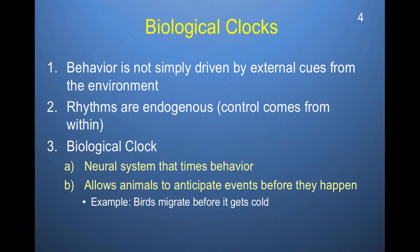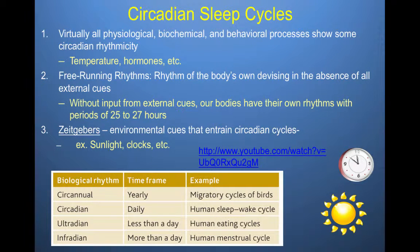To regulate our biological rhythms, we have a biological clock. Behavior is not simply driven by external cues from the environment — biological rhythms are actually endogenous, meaning the control comes from within our bodily system. Our biological clock is a neural system that times behavior and allows animals to anticipate events before they happen. For example, birds migrate before it gets cold, and we know when the sun is going to rise and set. One of the most important aspects of our biological clock is the circadian sleep cycles that are dependent upon it.